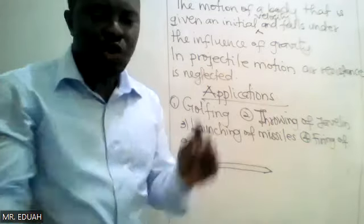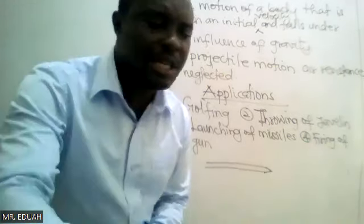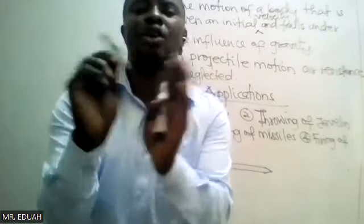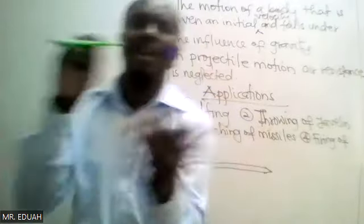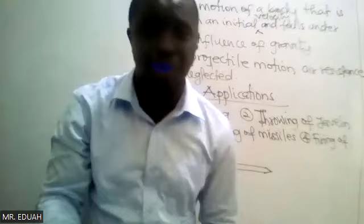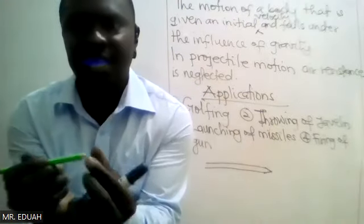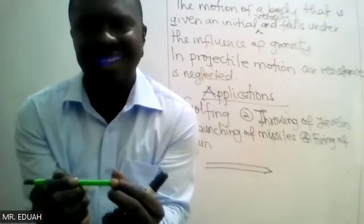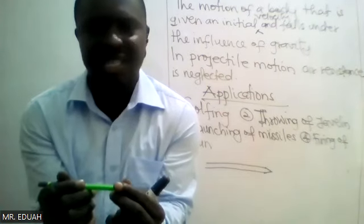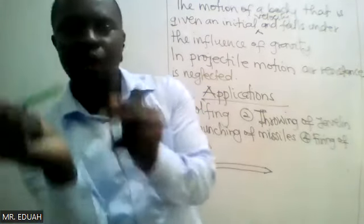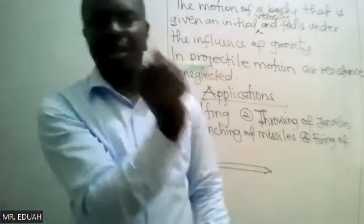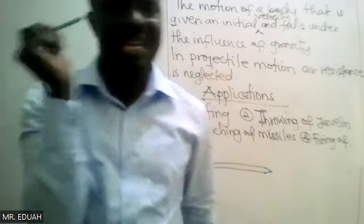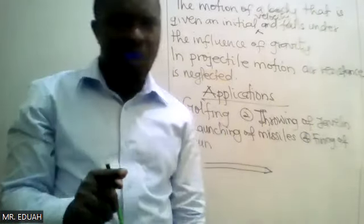Nobody throws javelin using the larger cross-sectional area end. He or she uses the larger cross-sectional area - it throws it in that direction and it will not go. It is always the pointed end that has to go first. And if you do that, it will easily pass through the air and get to the target.